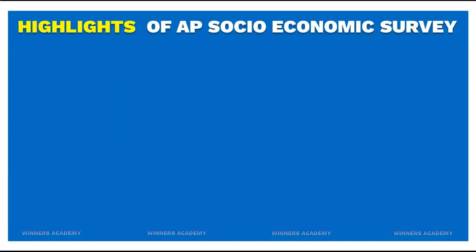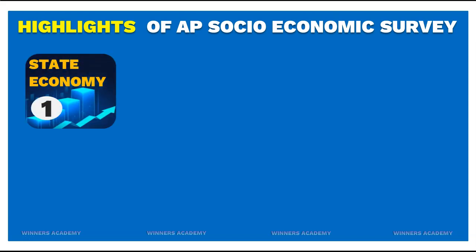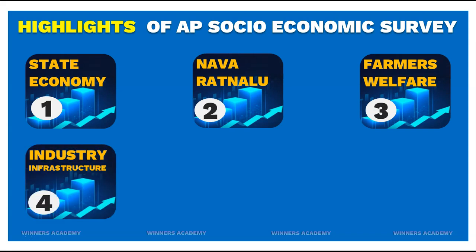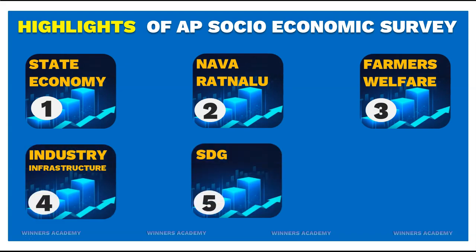Highlights of the AP Socio-Economic Survey. The government has 5 priority areas that are discussed in this survey, and the chances of questions coming from these areas in exams are very high. Those 5 priorities are: 1. State Economy, 2. Navaratnalu, 3. Farmers Welfare, 4. Industry and Infrastructure, and 5. Sustainable Development Goals.